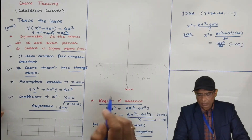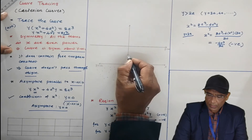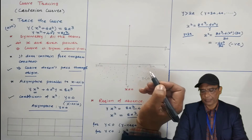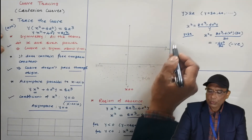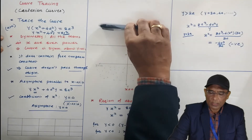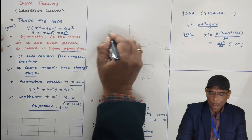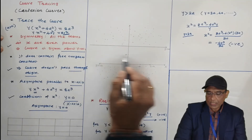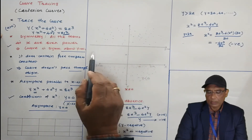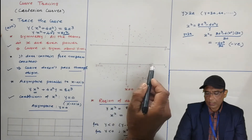So y > 2a is also a region of absence, and y < 0 is the region of absence below. Above y = 2a, the curve will be absent. The curve exists only in the strip between y = 0 and y = 2a. This is the region of presence.